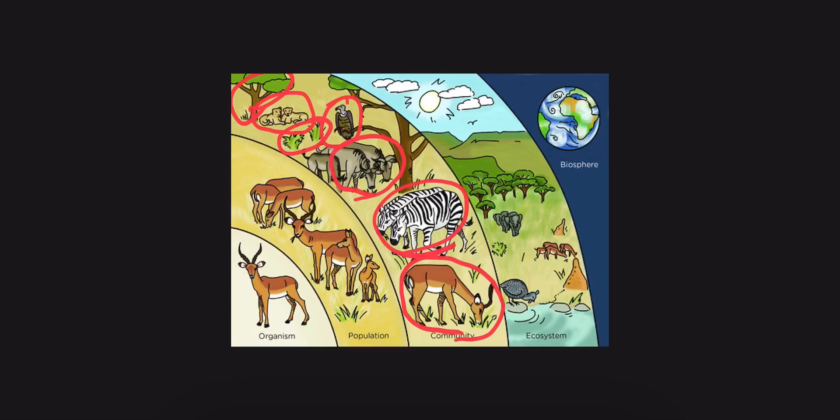Our ecosystem is living and non-living things in our environment. So for example, we have animals, trees, and we have non-living things, which I'm going to circle in blue. For example, water, rocks, and soil are all non-living things that are part of our ecosystem.